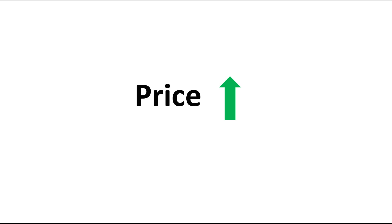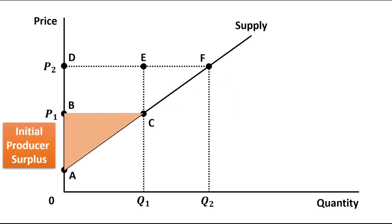Now, suppose that the price level increases. As you can see in this figure, this was the initial producer surplus A, B, C. And now the price level has been increased from OP1 to OP2.